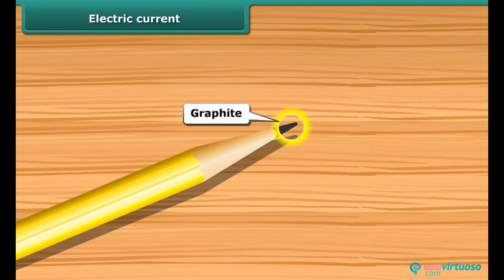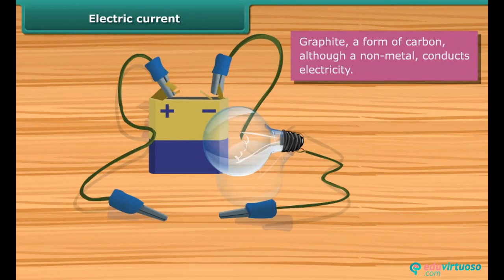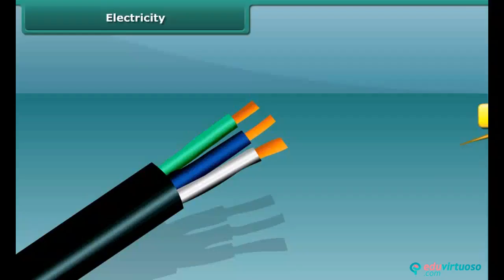It can be tested whether a given material is a conductor of electricity or not. Place the given material between the free ends of wires in an electric circuit. Bring the free ends of the two wires close, now let them touch each other. If the bulb glows, the material is electrically conducting; otherwise, it is an insulator.